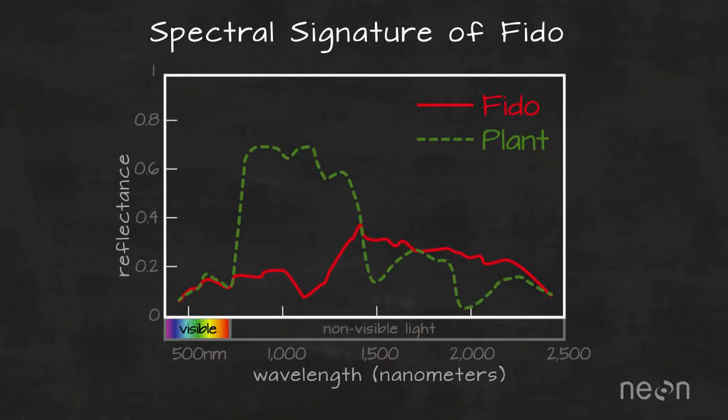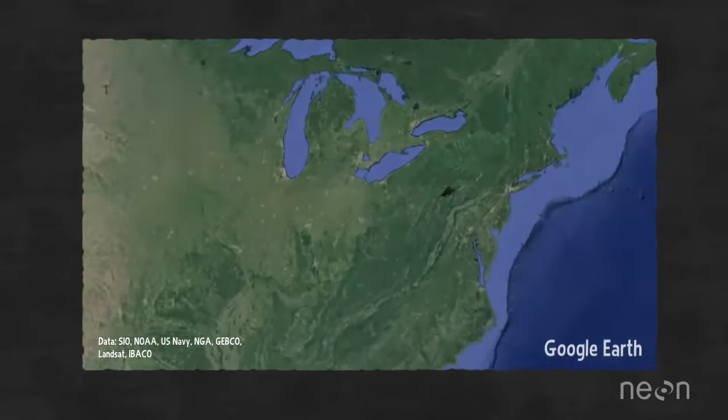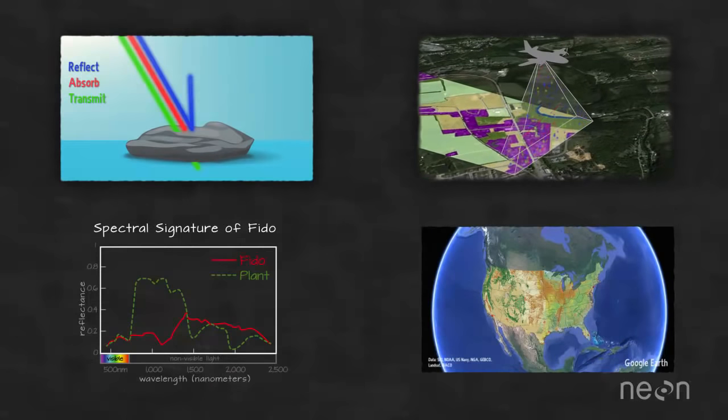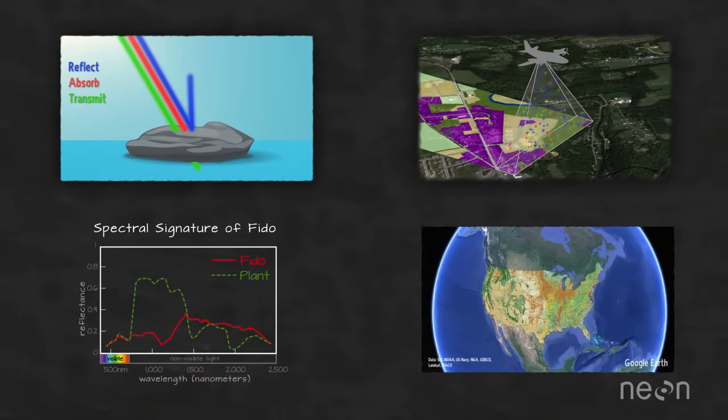We can use that signature to identify different objects in both the photograph and across the Earth's surface. And that, my friends, is how we use reflected light energy to both map what's on the ground and measure changes in our environment.